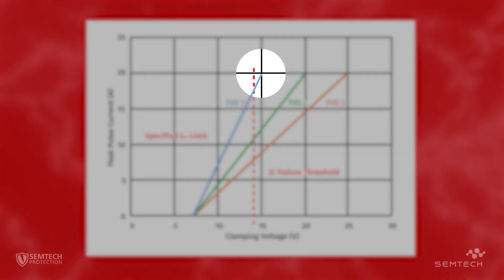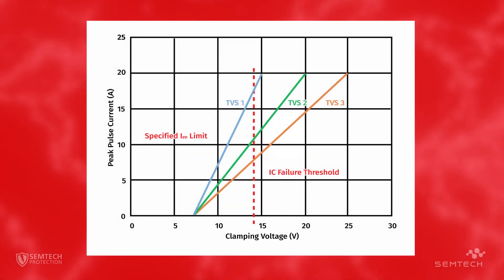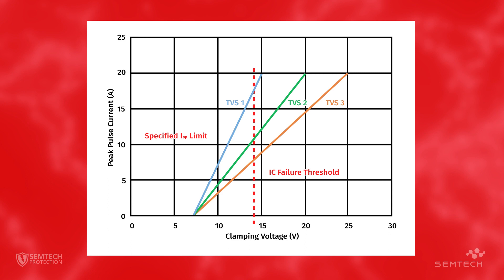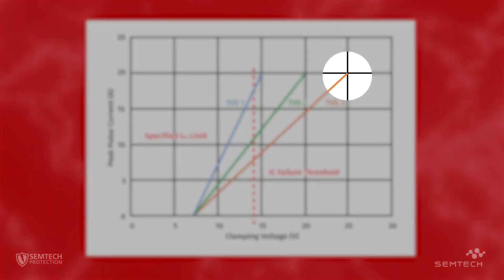The PPK rating of TVS1 is 300 watts for a 20 amp pulse. The PPK rating of TVS2 is 400 watts for a 20 amp pulse. And finally, the PPK rating of TVS3 is 500 watts for a 20 amp pulse.